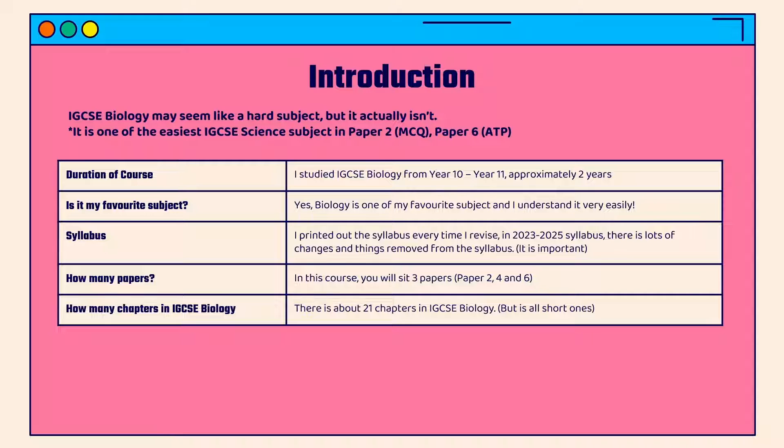In this course you will sit three papers: paper 2, paper 4, and paper 6. Paper 2 is MCQ, paper 4 is structured questions, and paper 6 is practical questions. There are about 21 chapters in biology — it's a long list, but the chapters themselves are quite small, so it shouldn't feel as long as chemistry or physics.